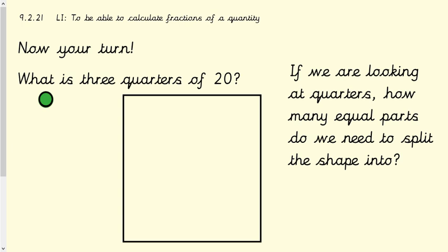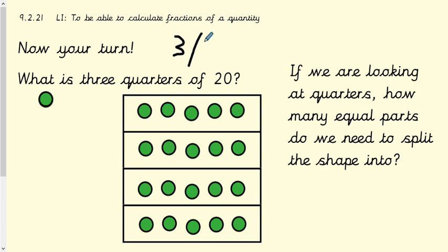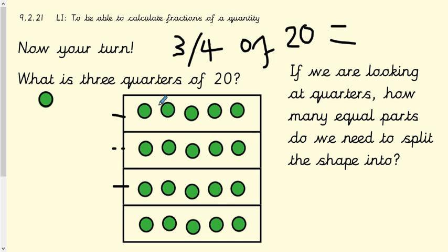Now it's your turn — find three quarters of 20, then we'll go through it together. I've split my shape into four equal sections because we're looking at quarters, then shared out 20 counters. For three quarters, we count three boxes. If you counted them all up you'd get 15. So three quarters of 20 is 15. You could also have worked out that one quarter is five, and five times three is 15.